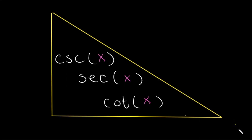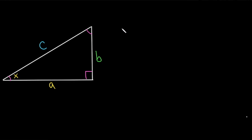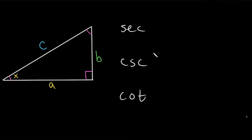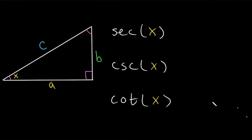Cosecant, secant, and cotangent. Today we're going to be talking about the next three trigonometric functions, which are secant, cosecant, and cotangent. So what if we were to take the secant, cosecant, and cotangent of this angle, x?